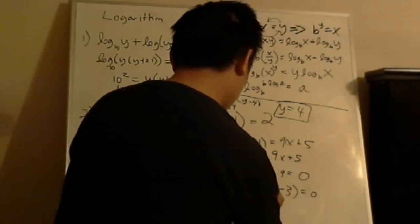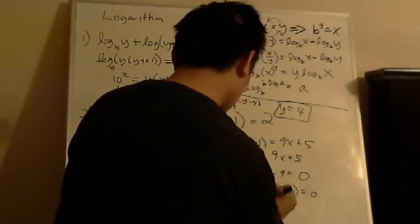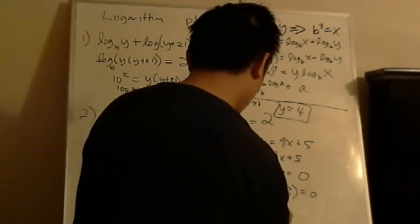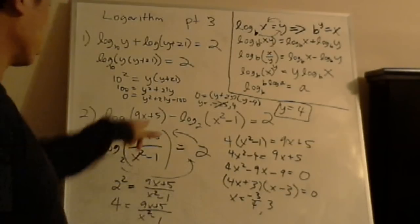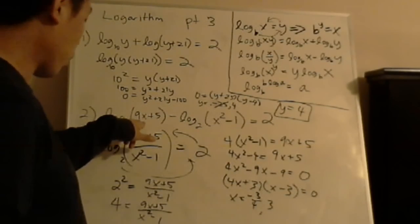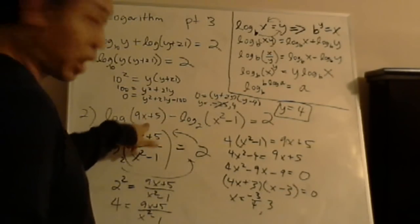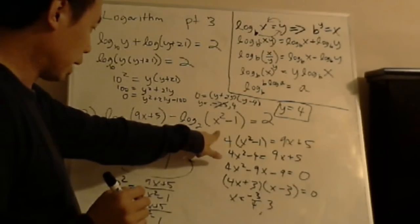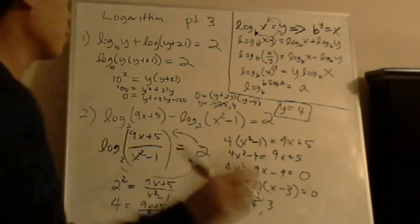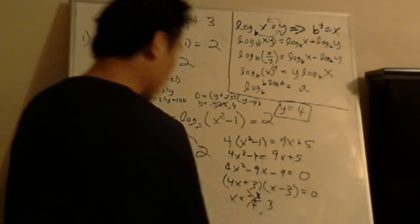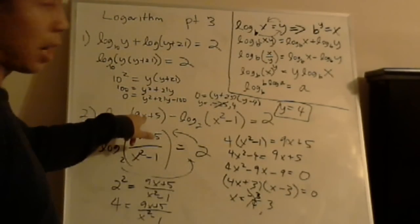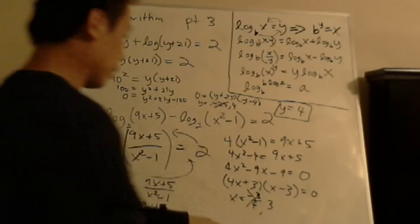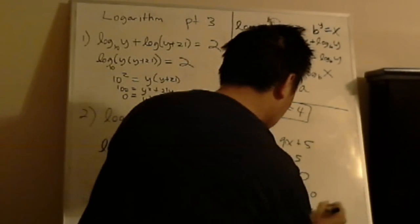So you plug it back to the original equation. Negative 3 fourths, you plug it in here, you'll get a positive number, so that's good. You plug it in here, let's see, you will get 9 twelfths minus 1. That's a negative number, so that's no good. 3, you put it in here, easily positive, 3 times 9 plus 5, it's like 32. 3 squared minus 1, that's 8, so that's the only possibility. So it will be x equals to 3.